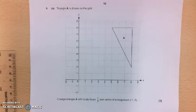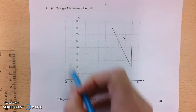So to begin with, in question 9, we've got to do an enlargement. Triangle A is on the grid. Enlarge triangle A, scale factor 1 third, and centre of enlargement minus 1, 5. So first of all, I'm going to mark my centre of enlargement, minus 1, 5.